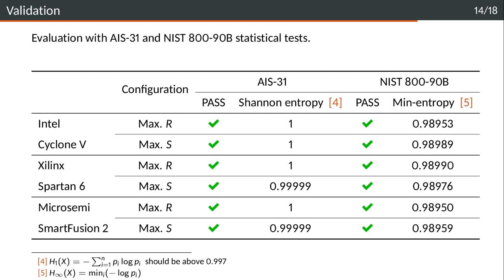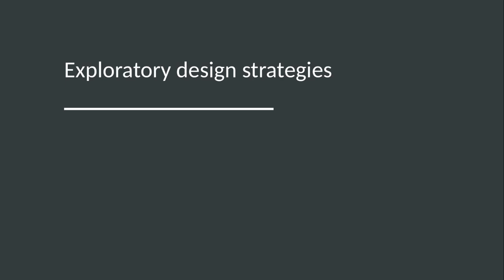Then we evaluated the randomness of the data that we generated. We generated a bunch of random data and evaluated it with AIS-31 and NIST 800-90B statistical tests. All six configurations successfully passed the tests and we see that the entropy evaluation results are also very good, and that the entropy is very high. We extract very good randomness from these configurations.